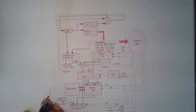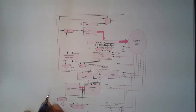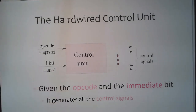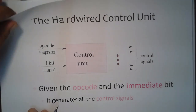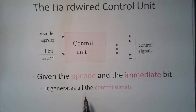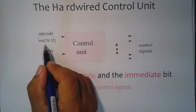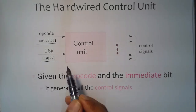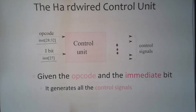The hardware control unit takes six bits as input: five bits for the opcode and one bit for the immediate. Depending on these six bits, the control unit generates all control signals. There is another way of implementing the control unit called a microprogrammed control unit, but we will not cover it in this course since hardware control units are more popular and provide better performance.